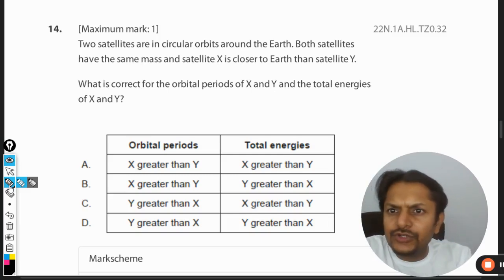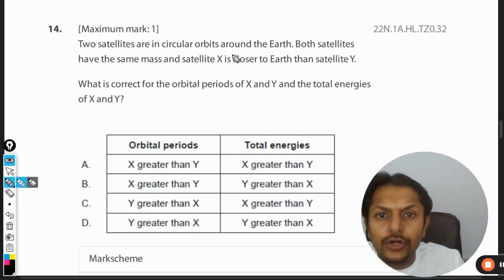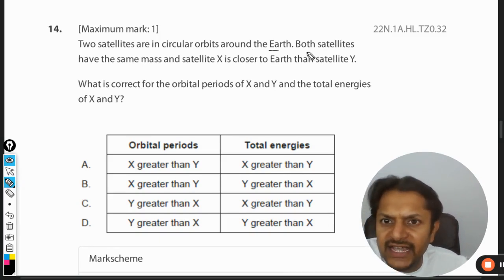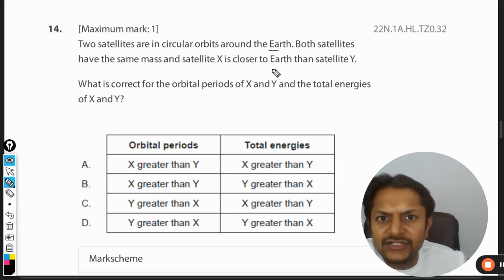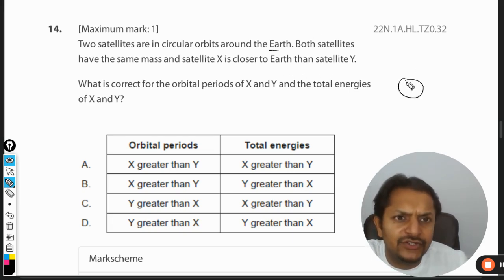Okay, let's see what is there in this question. Two satellites are in circular orbit around the Earth. Both satellites have the same mass, and satellite X is closer to the Earth than satellite Y. Let us first draw a simple diagram here.